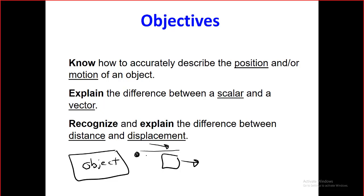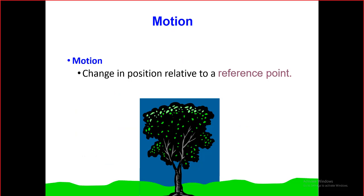We're going to discuss these one by one: the speed, the distance, the displacement, the direction, and so on. Let's start with the first point. Before we describe the motion, we need to know exactly what 'motion' means.